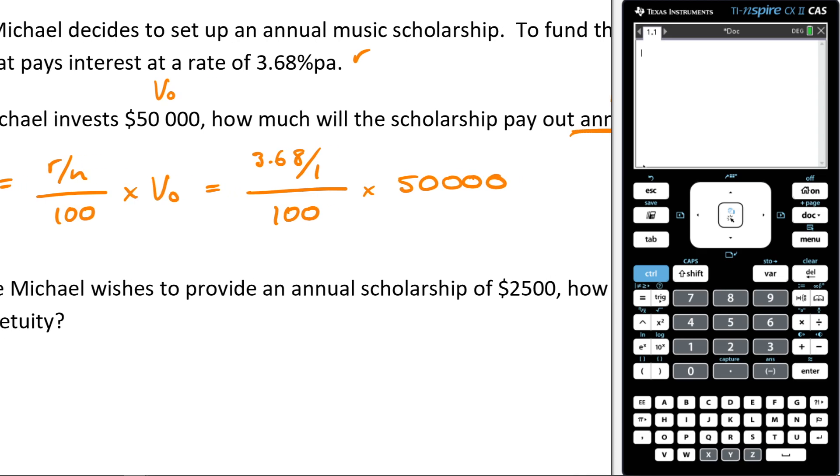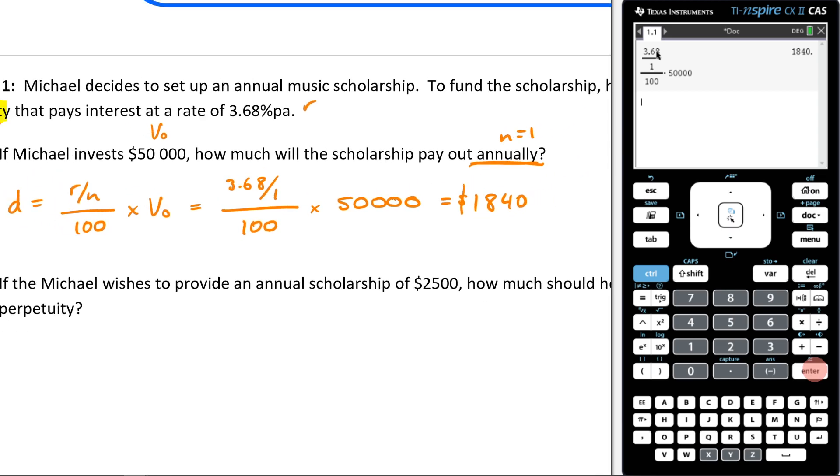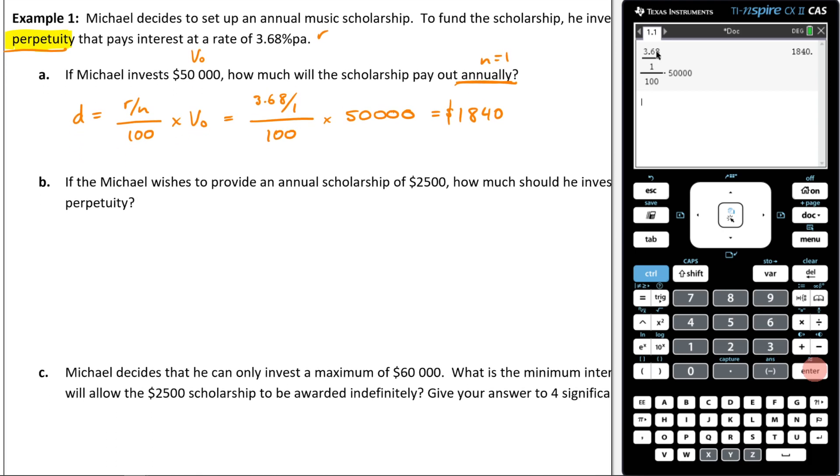I'll now come to my calculator and put that information in. So I'm going to go control divide, 3.68 divided by 1 over 100, and then I'm going to times it by 50,000. When I do that, I'm going to end up with 1,840. So that is going to be my answer, $1,840. That's how much it's going to pay out. Let's now move on to the next one here.